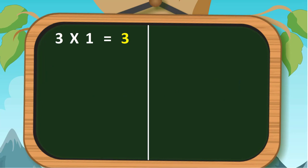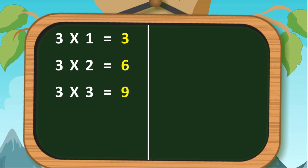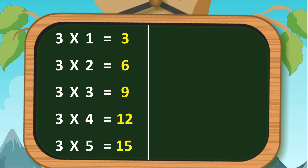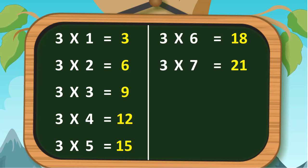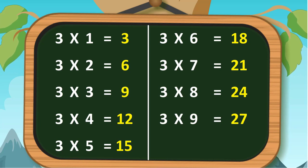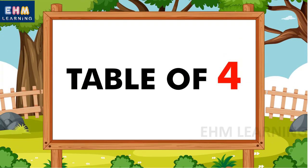Three ones are three, three twos are six, three threes are nine, three fours are twelve, three fives are fifteen, three sixes are eighteen, three sevens are twenty-one, three eights are twenty-four, three nines are twenty-seven, three tens are thirty.